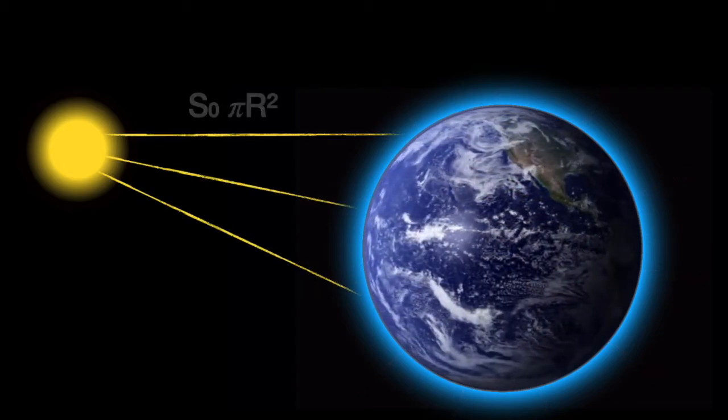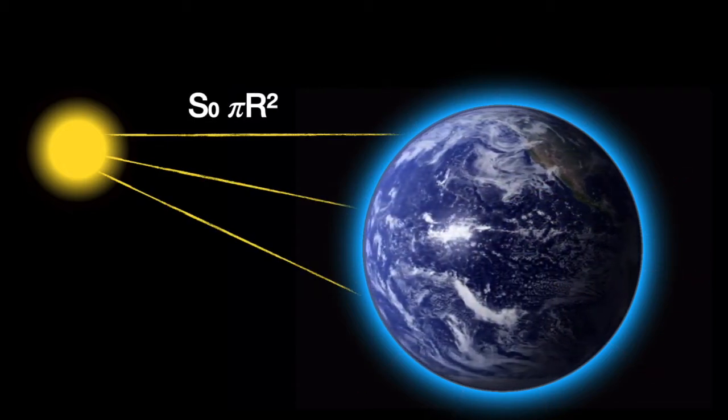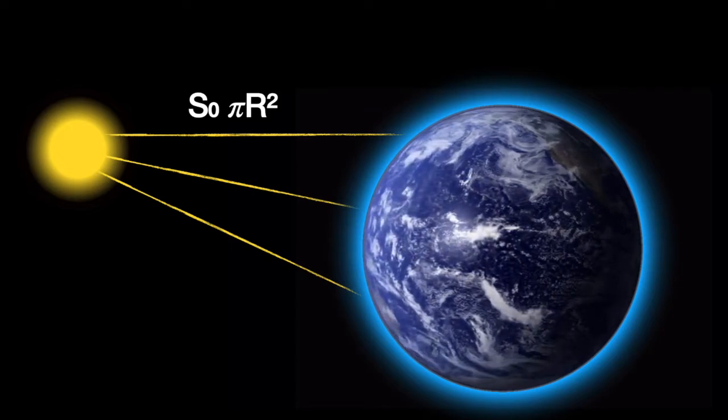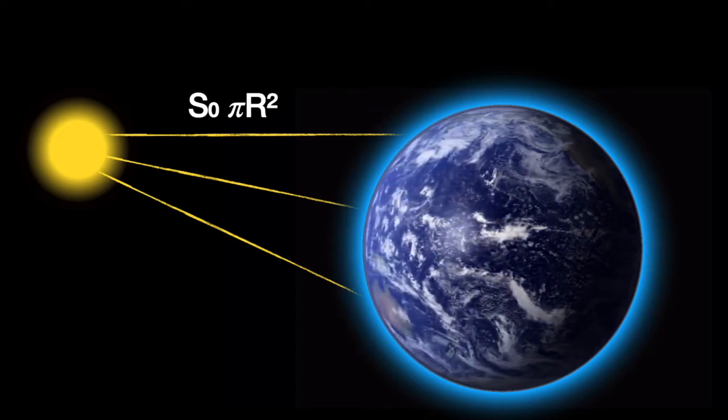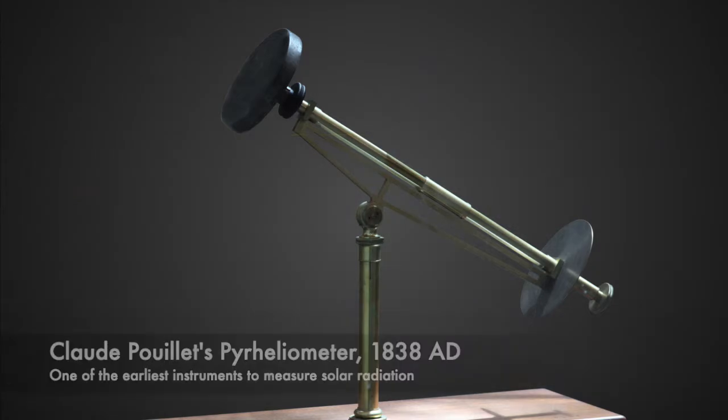We know the irradiance coming from the Sun quite well. We know that from astrophysics and from direct satellite measurements. And we've been measuring the solar energy hitting the ground of our planet with pyrheliometers for over a hundred years.